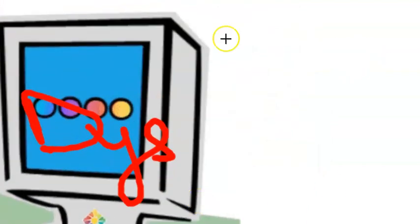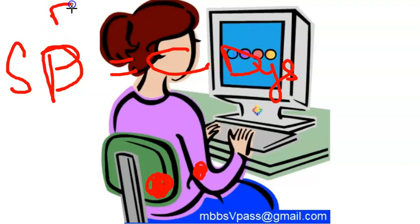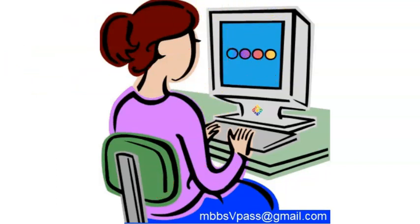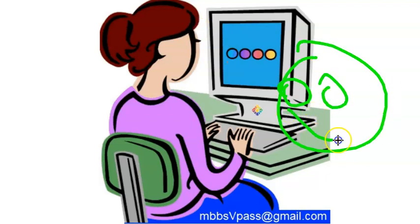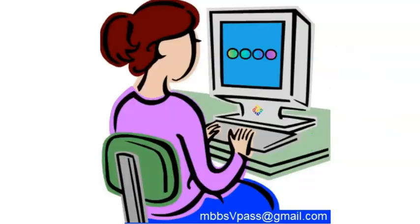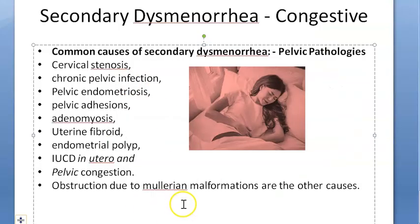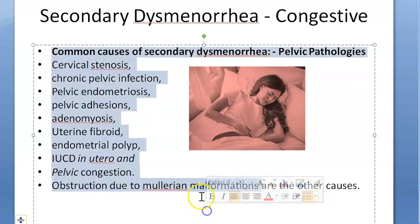The pain in secondary dysmenorrhea is dull, situated in front and back, without radiation. It appears three to five days prior to the period and relieves at the start of bleeding. The onset and duration of pain depend on the underlying pathology — so depending on which pathology is present, there will be variation in onset and duration.